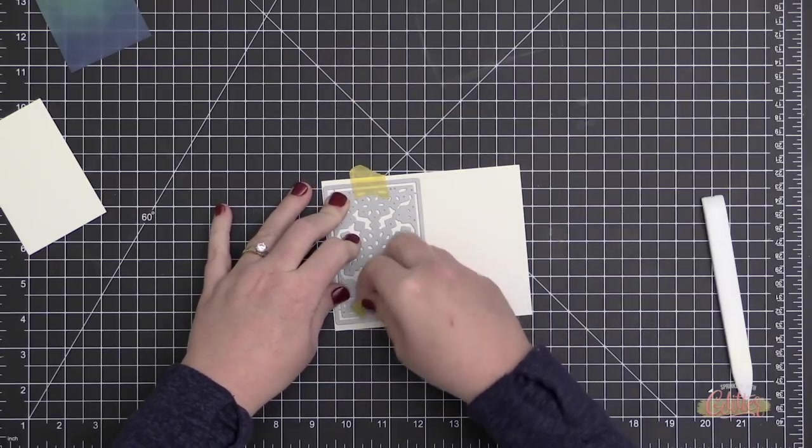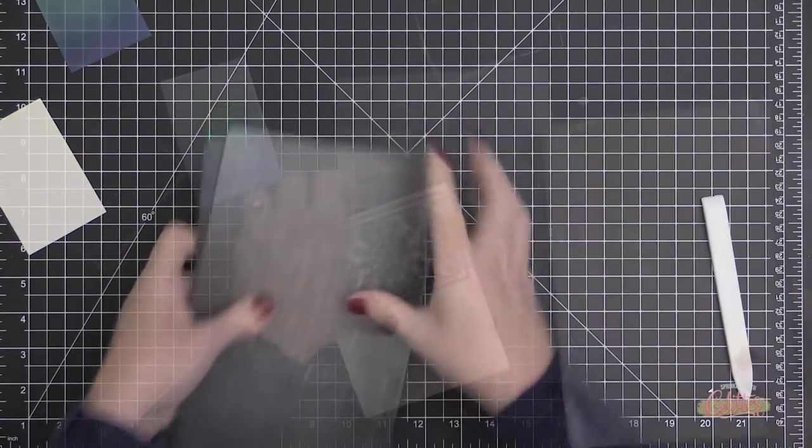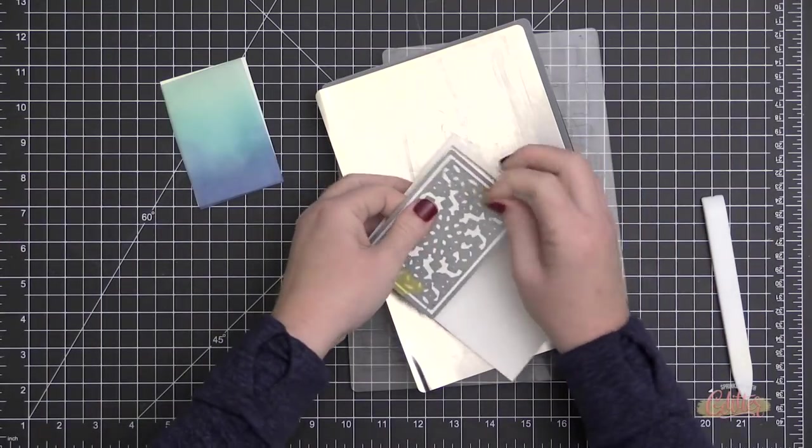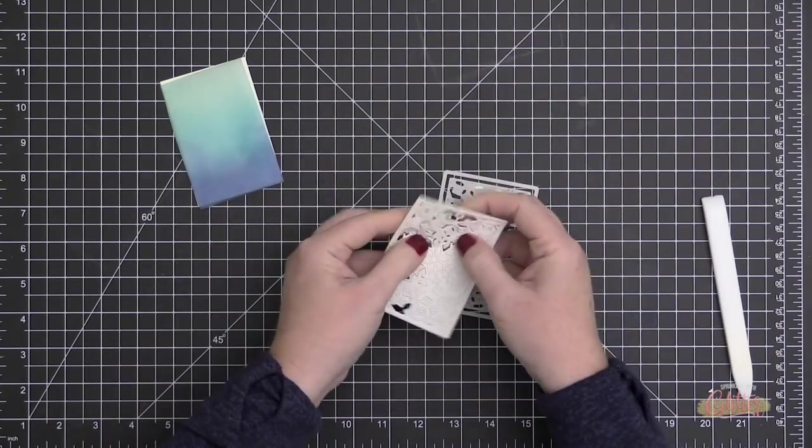Now once that's on there, I'm going to take my Snowflake Window Die and hold it in place with some delicate surface painter's tape. Then I'm going to run it through my die cut machine, and I did use my shim for this because I wanted to get a really nice clean cut with this intricate die.